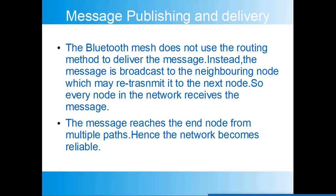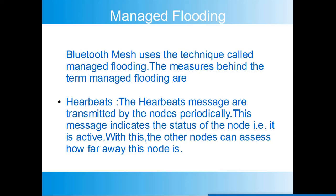Bluetooth mesh does not use a routing method to deliver messages as ZigBee does. Instead, the message is broadcast to neighboring nodes, which may retransmit it to the next node. Every node in the network receives the message, and the message reaches the end node from multiple paths, making the network reliable. Since every relay node retransmits the message, it arrives at the end node via multiple paths — that is how the reliability of the network is ensured.